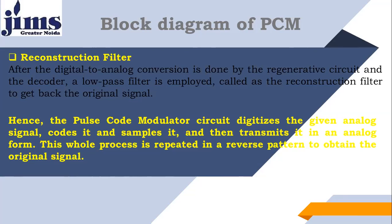This is the complete explanation of the pulse code modulation system, which has two parts: the PCM transmitter — containing sampler, quantizer, and encoder — and the PCM receiver — containing decoder and reconstruction filter — with a channel in between. This is the basic concept of communication: you always have a transmitter, a receiver, and a channel.